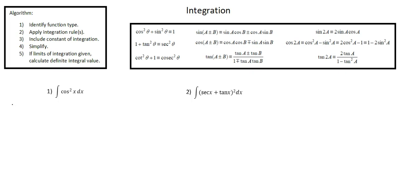Using our algorithm, step one: identify function type. We're dealing with a trig function, and in this case the squaring function — the outer function — is going to lead us to look for a trig identity to replace cosine²x with so we can integrate.